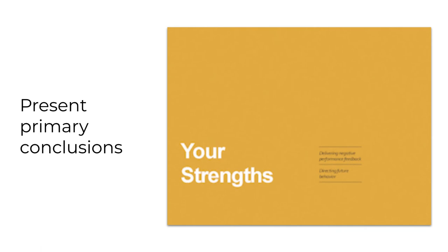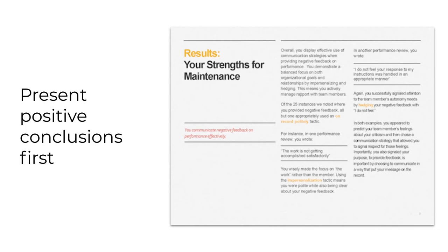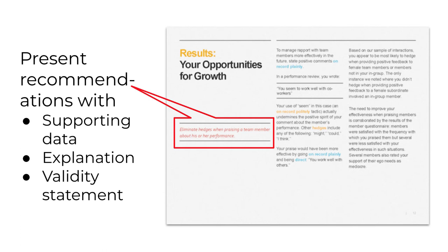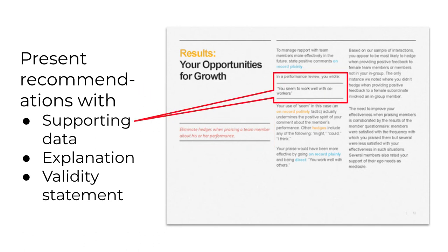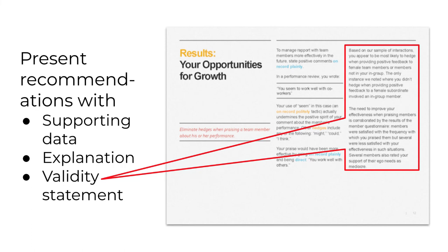In the sample slide deck, there were two types of conclusions. The writers presented the positive conclusions first — two strengths were described, each occupying a single page. The sample slide deck also made two recommendations for change, each occupying a single page. To ensure the audience both understands and is persuaded to accept recommendations based on research, three kinds of information should appear with each recommendation: specific results demonstrating the basis of that recommendation, an explanation of how or why those results support the need for change, and a validity statement that demonstrates the quality of the results and conclusion.